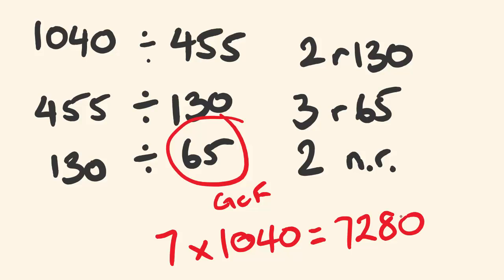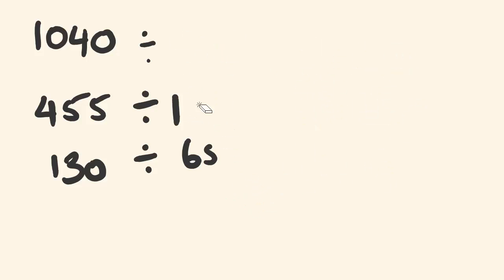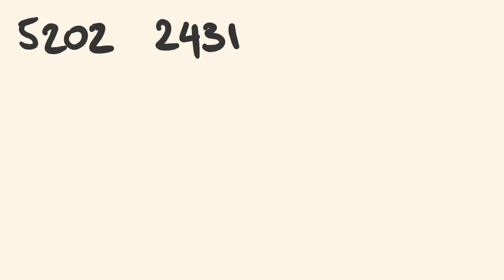That's where this method is really cool for working with big numbers. Now let's do the nastiest example you might ever get: the LCM of 5202 and 2431. We start by dividing one into the other: 5202 divided by 2431 goes 2 times with a remainder of 340. You can pause and give it a go from here.